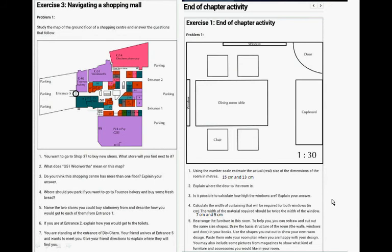Is it possible to calculate how high the windows are? Calculate the width of curtaining that would be required for both windows. The windows are 7 centimeters and 5 centimeters. You can use the scale. Rearrange the furniture in this room to help you. You can draw and cut out the same size shapes, draw the basic structure of the room, use the shapes, and paste them into your room.